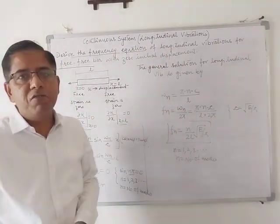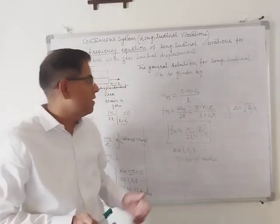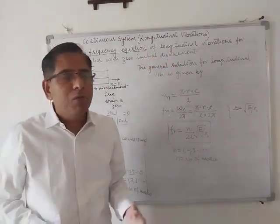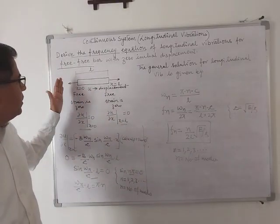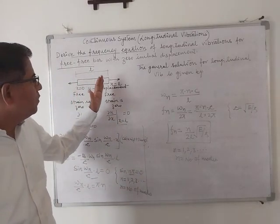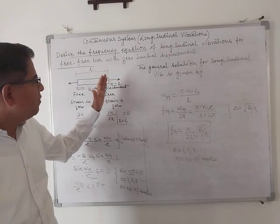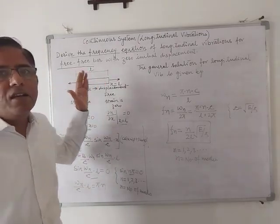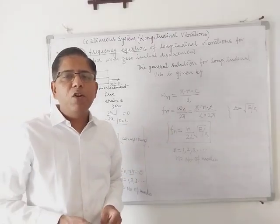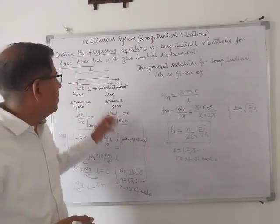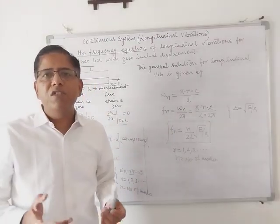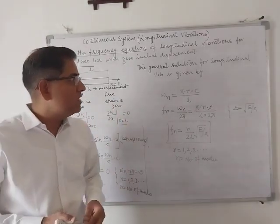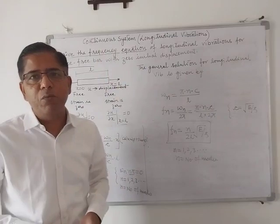So this is how you derive the frequency equation. In this way you can find out the frequency equation for different boundary conditions — free-free, fixed-fixed, or fixed-free. For a fixed end the displacement is zero, and for a free end the strain is zero. By applying these conditions you can easily find the frequency equation.